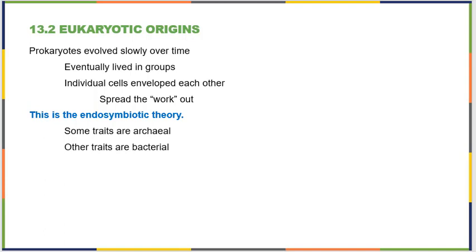What we find in modern eukaryotic cells is that some of our traits seem to be archaeal in history — they seem to have come from archaea — and some of our traits are shared by bacteria. So it looks like at one point in time, different prokaryotes were brought together within the same cellular structure, lived in harmony essentially, and kept propagating that life form.